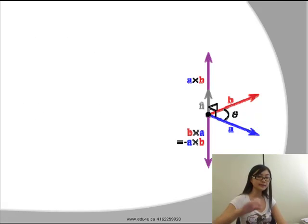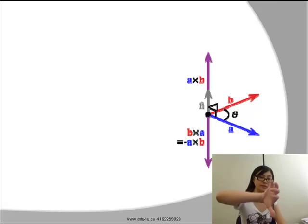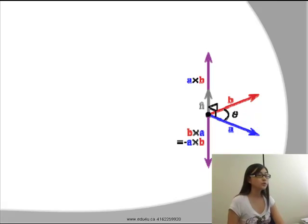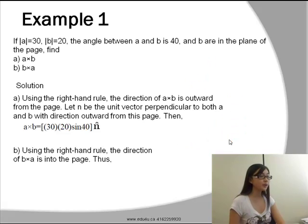On contrast, if we have to cross B cross A, then we have to use our hand and we have to go from the direction of B to the direction of A. Our thumb will be pointing down, which means the direction of B cross A is into the page.